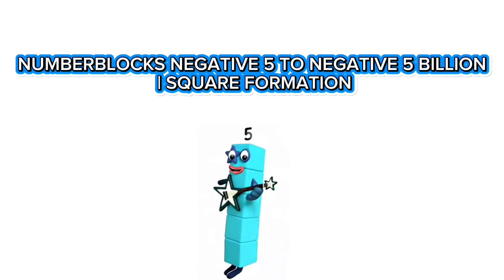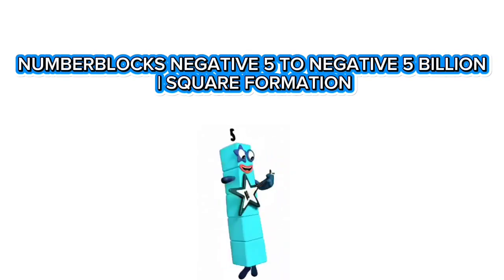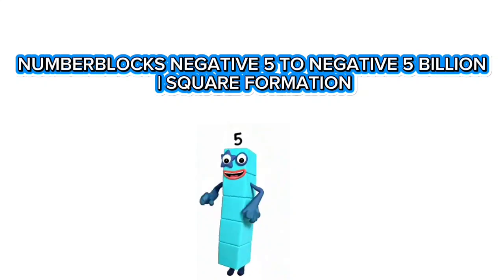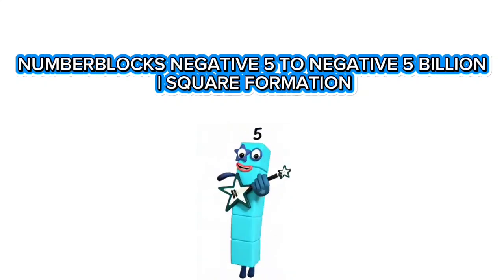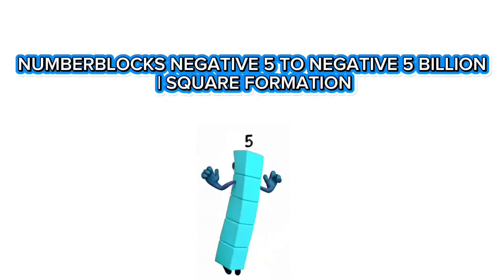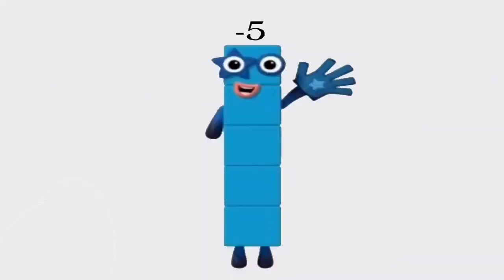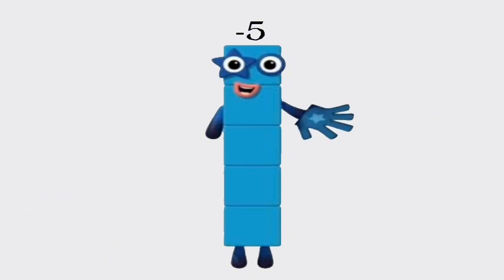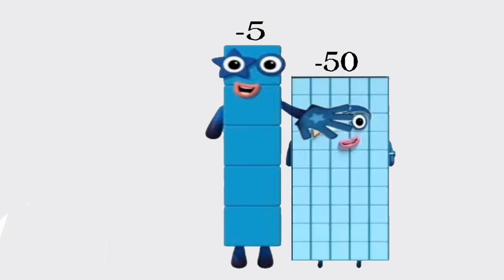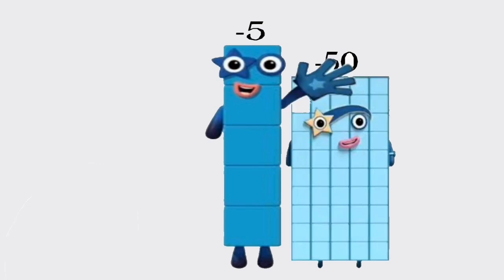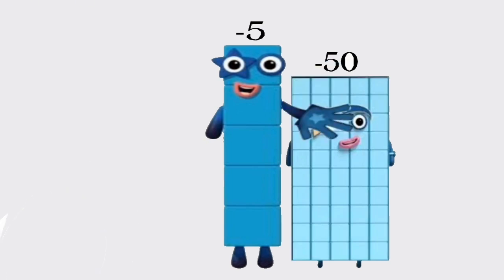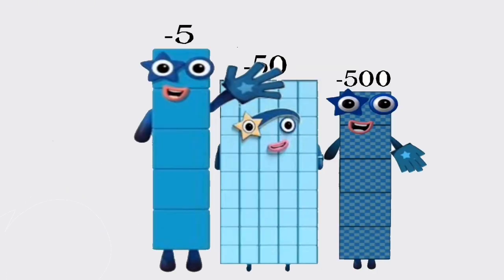Number blocks negative 5 to negative 5 billion, square formation. Negative 5. Negative 50. Negative 500.